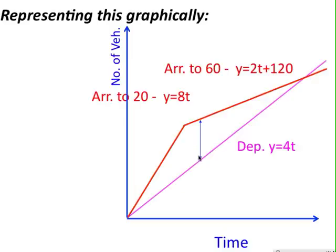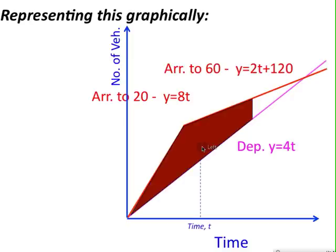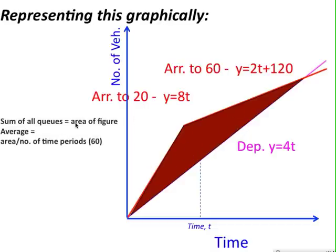Now, just like we did in that table, if we added all of those up, it's essentially just calculating the area between these curves. If I just add up all of those time periods, the sum of the queues is equal to the area of the figure between those graphs.